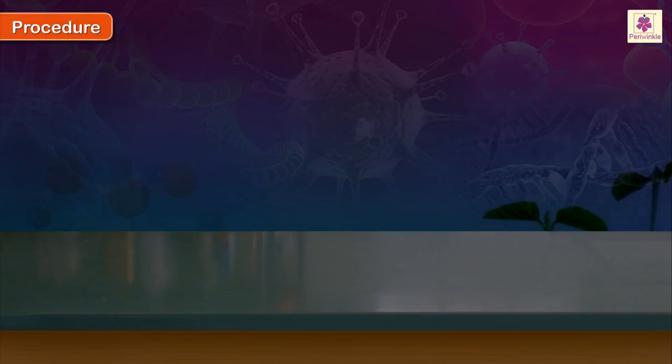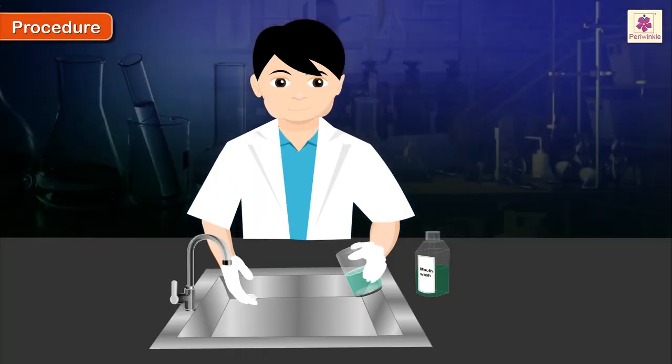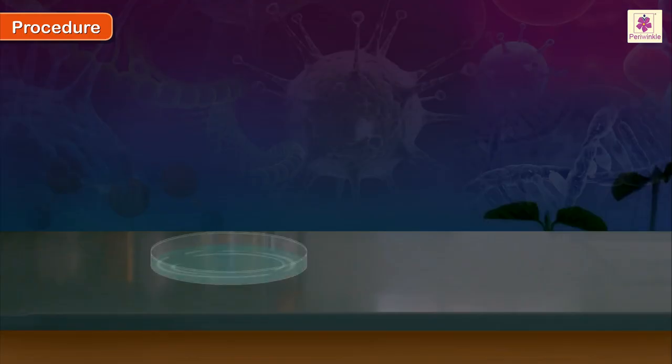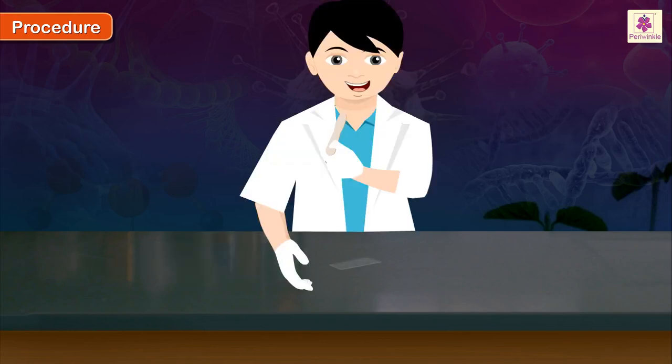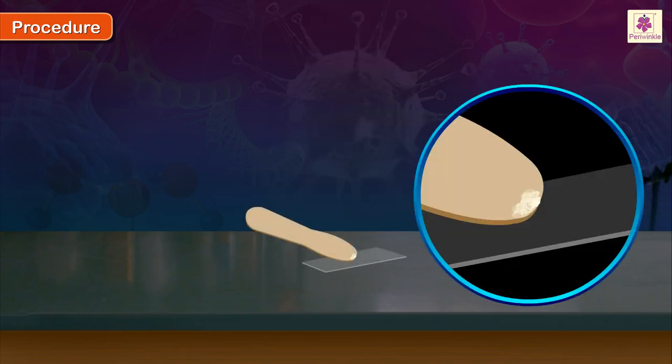Procedure: Rinse your mouth with distilled water to which a suitable antiseptic has been added or use a mouthwash. Wash a spatula-like wooden spoon used for having ice cream in the antiseptic or mouthwash. With the disinfected ice cream spoon, very gently scrape the inner walls of your inside cheek. Place the scraping at the center of a dry and clean glass slide.